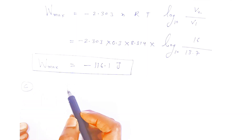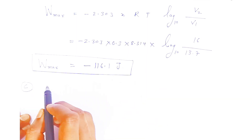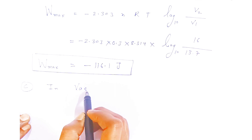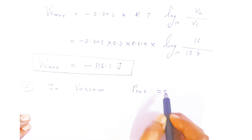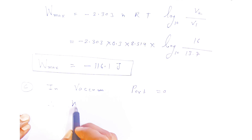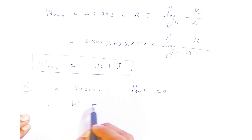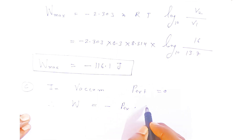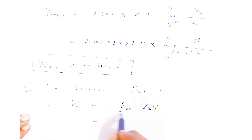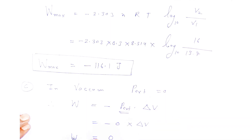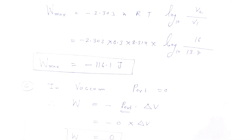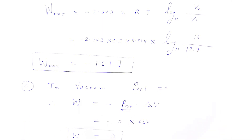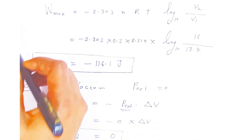Now for part C, when the expansion happens in vacuum, p_external equals zero. Using the formula w = -p_external × ΔV, since p_external is zero, zero multiplied by any quantity is zero. Therefore the work done is zero. So when a gas expands into vacuum, no work is done. These are very important questions in examinations — they are asked for 4 marks.